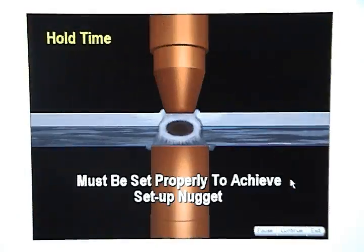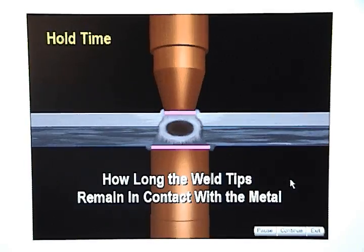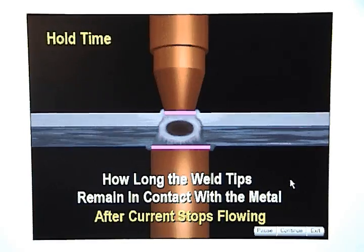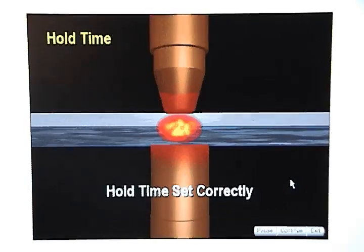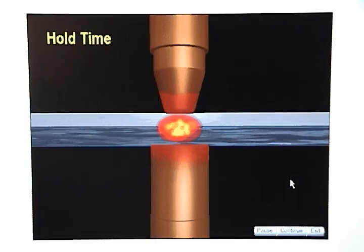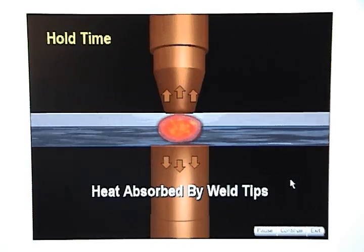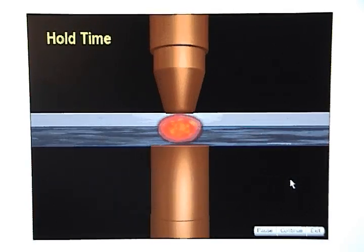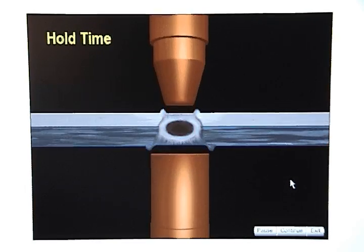Hold time must be set properly to create a setup nugget. Hold time is how long the weld tips remain in contact with the metal after current stops flowing. If hold time is set correctly, heat will be absorbed by the weld tips, and the outer perimeter of the weld nugget will harden before the weld tips open.